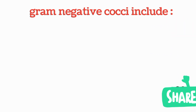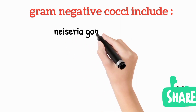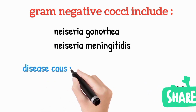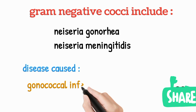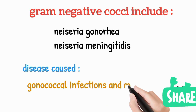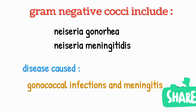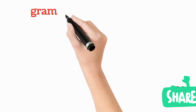Gram negative cocci, under the free-living bacteria category, comprise two types: Neisseria gonorrhoeae and Neisseria meningitidis. Neisseria gonorrhoeae causes gonococcal infections, which are reproductive tract infections. Neisseria meningitidis causes meningitis, which is inflammation of the meninges — the layer around the brain and spinal cord.